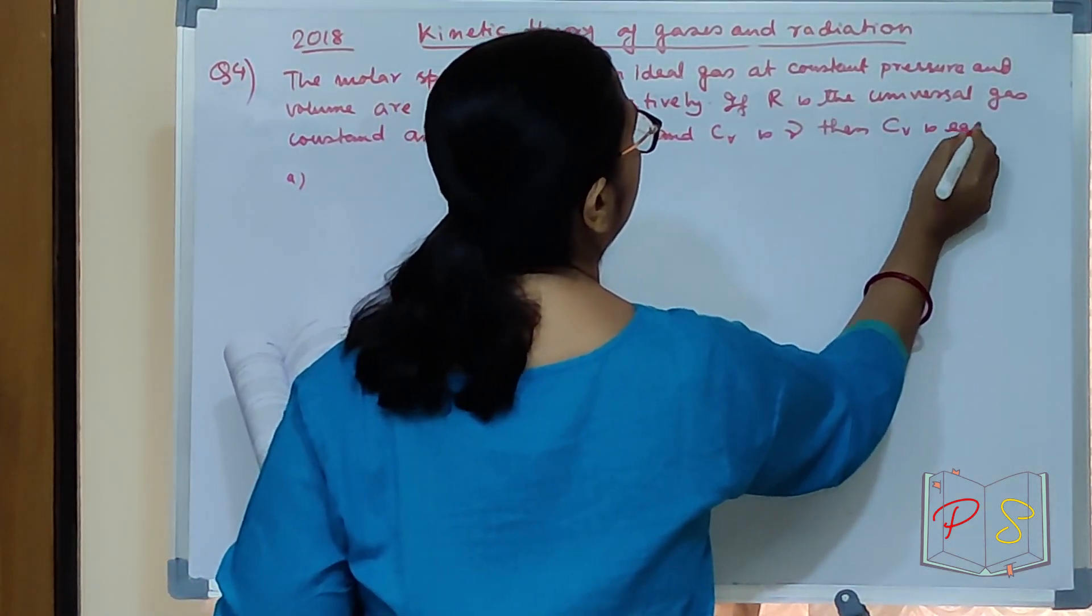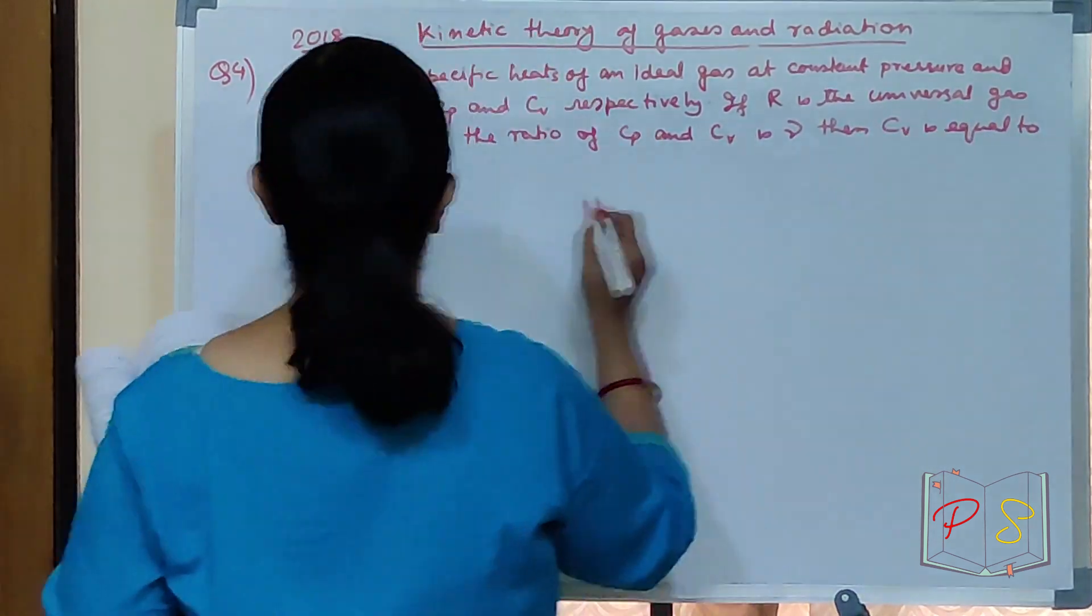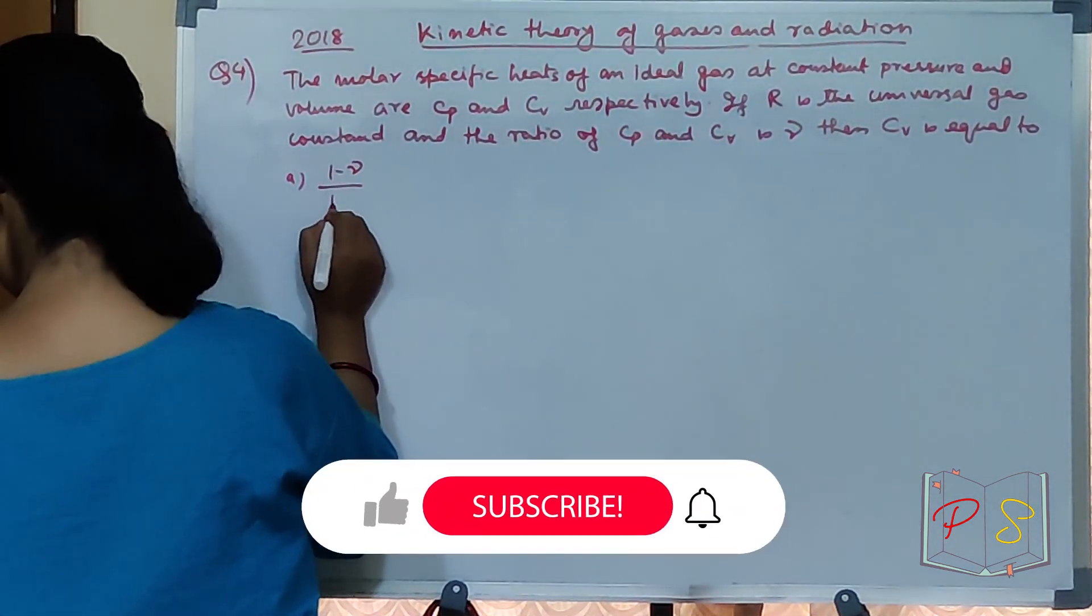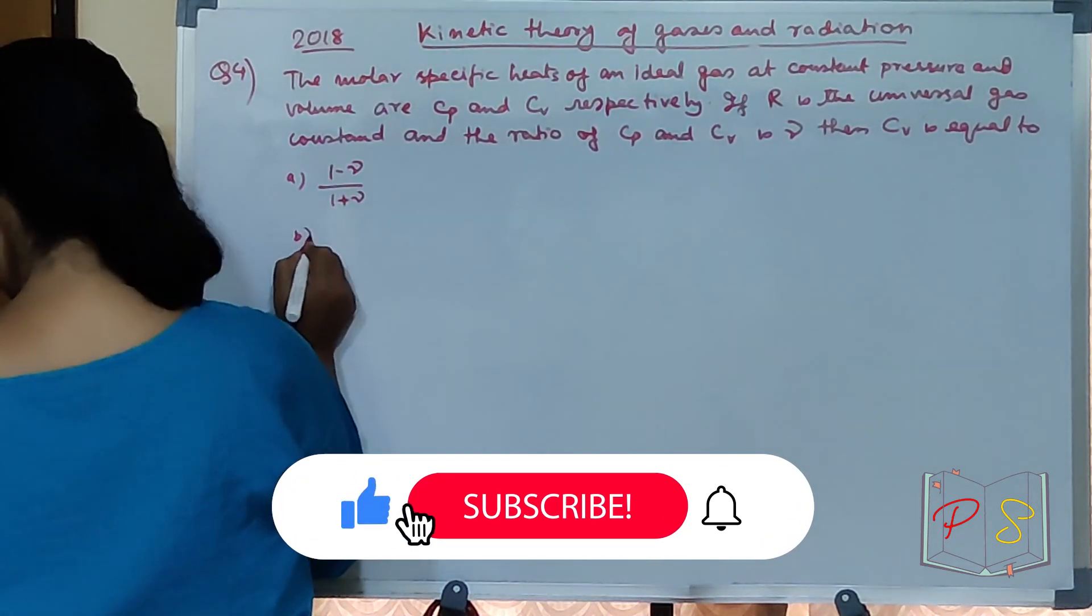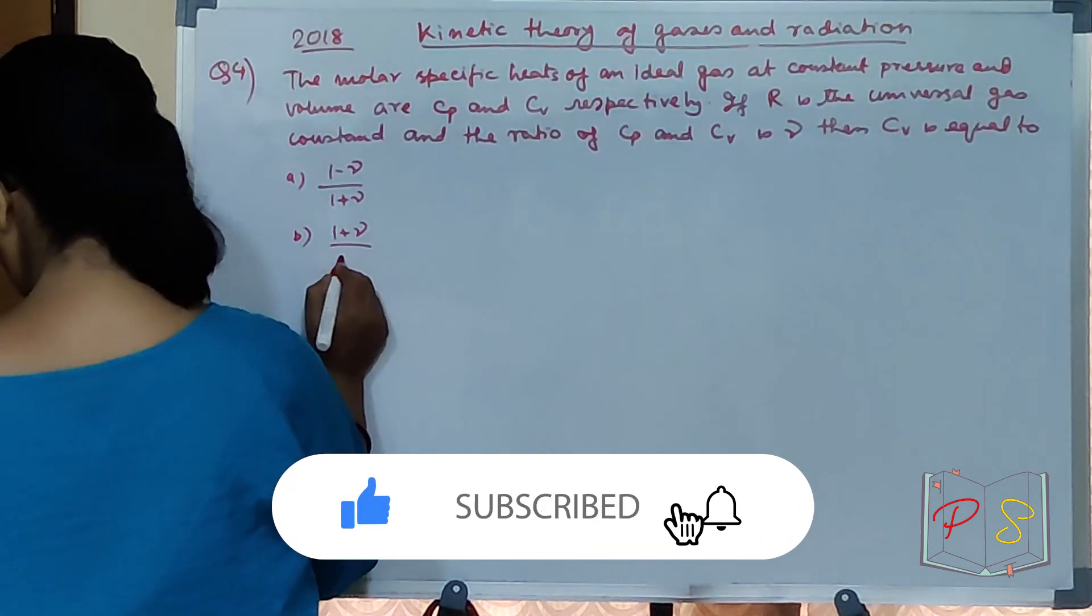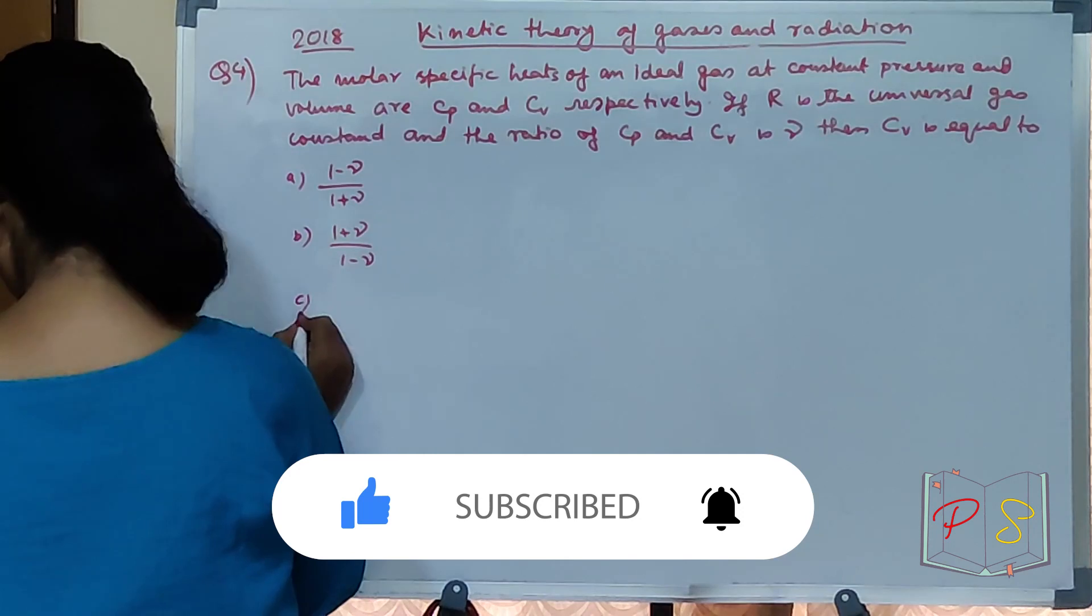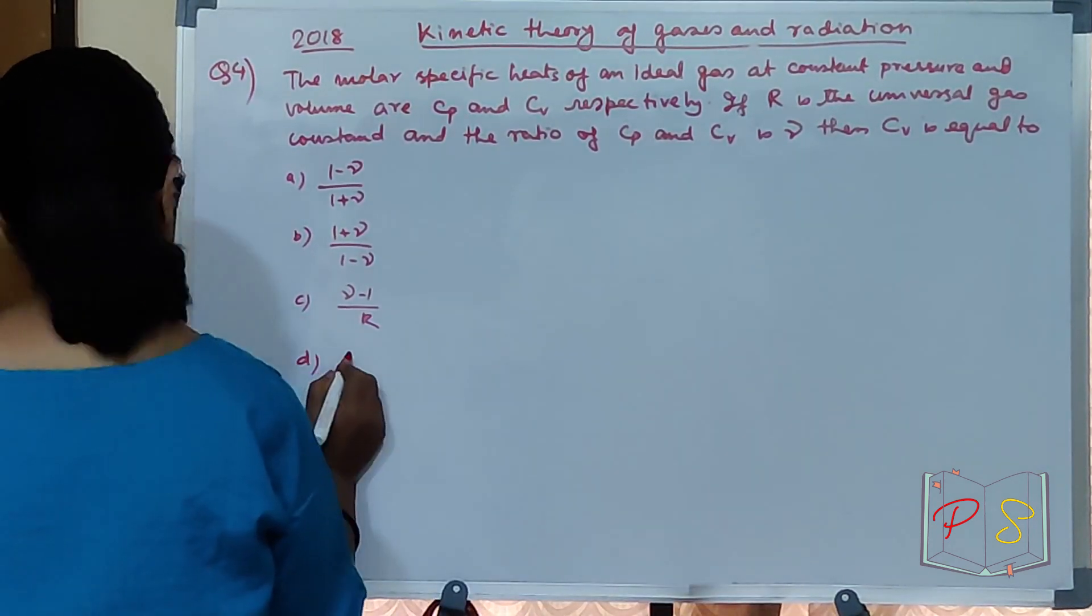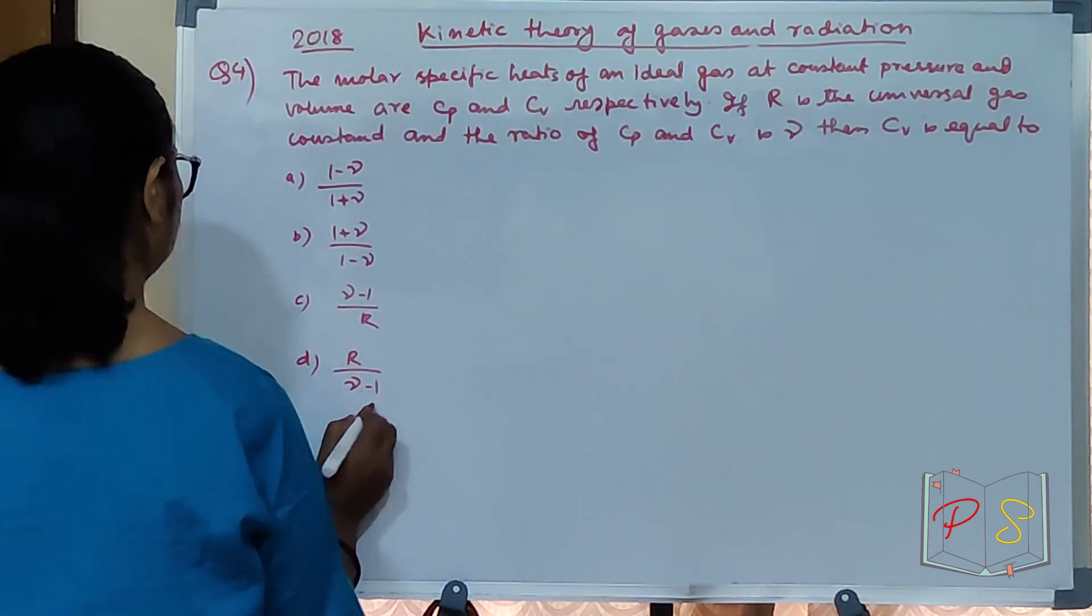Cv is equal to what? A is 1 minus gamma divided by 1 plus gamma, B is 1 plus gamma divided by 1 minus gamma, C is gamma minus 1 divided by R, D is R divided by gamma minus 1.